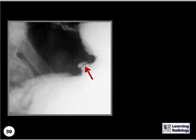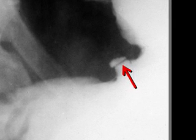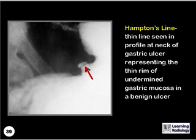What is the name of that line? That's Hampton's line, a thin line seen in profile at the neck of a gastric ulcer, representing the thin rim of undermined gastric mucosa, and representing a benign gastric ulcer.